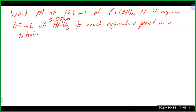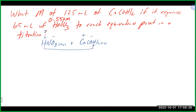We need an equation. Nitric acid is an acid reacting with calcium hydroxide, a base — this is a double displacement reaction. That's going to make water and calcium nitrate: 2HNO₃ + Ca(OH)₂ → 2H₂O + Ca(NO₃)₂. Let's make sure we have the right formulas and balance the equation — we need a coefficient of 2 in front of HNO₃ and 2 in front of H₂O.